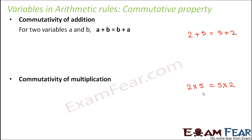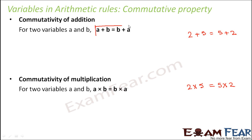What about variables? For variables also, if you have two variables a and b, a plus b is equal to b plus a. Similarly, a into b is also equal to b into a. So this rule holds true for variables as well — the order of the variables doesn't matter. The sum of two variables remains the same, and similarly the product of two variables is the same whether you change their order.